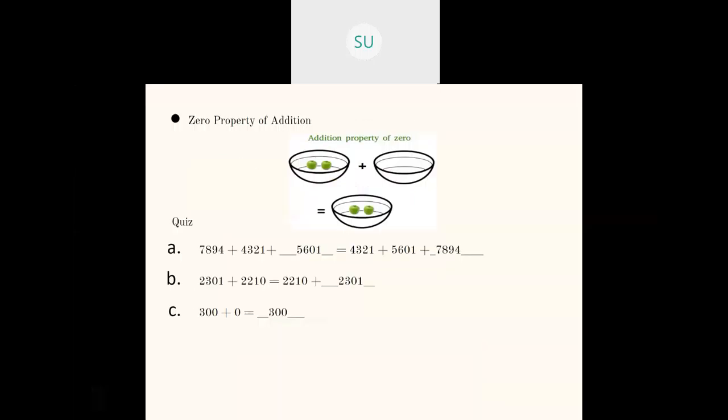Then we have the zero property of addition. When you add any number to 0, however large the number is, your final answer will remain the number itself. For example, there are 2 apples in one bowl and another bowl has no apples — 0 apples. There is nothing to add, so 2 plus 0 will be 2 only. This is the zero property of addition.